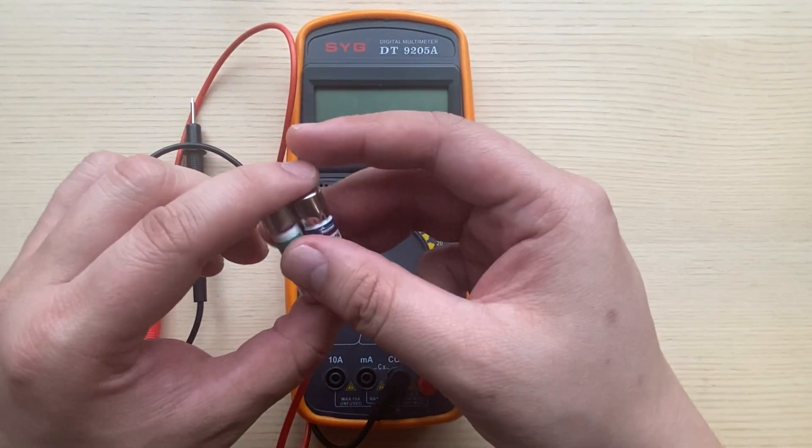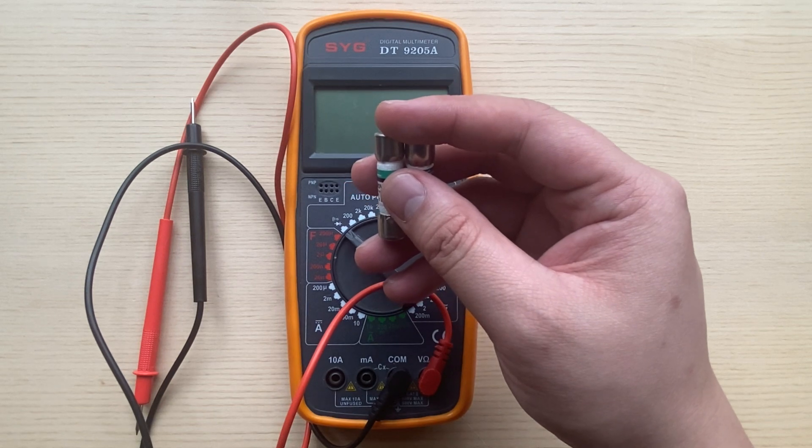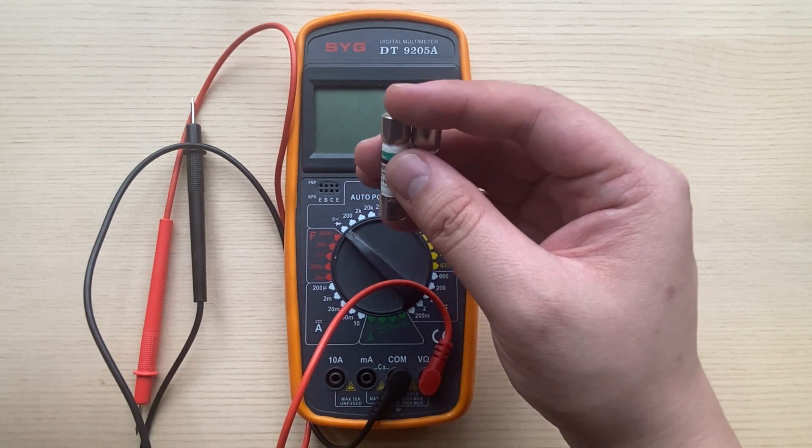Hi everyone, thanks for tuning in today. Today we're going to be taking a look at replacing a DMM fuse in your Fluke multimeter.